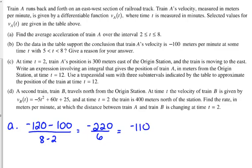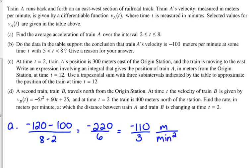You could divide by 2 to get negative 110 over 3, but please put your units. This is in meters per minute squared — acceleration is velocity divided by time, so the units are meters per minute squared. You get one point for the average acceleration. They usually take off points for missing units, so make sure you include this.